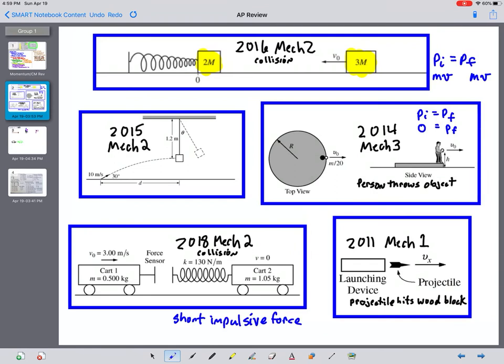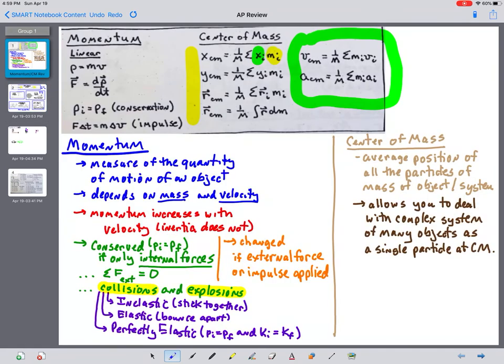So kind of recognize different situations where momentum is conserved. I want to go back here for a second. Don't want to pass over right there.